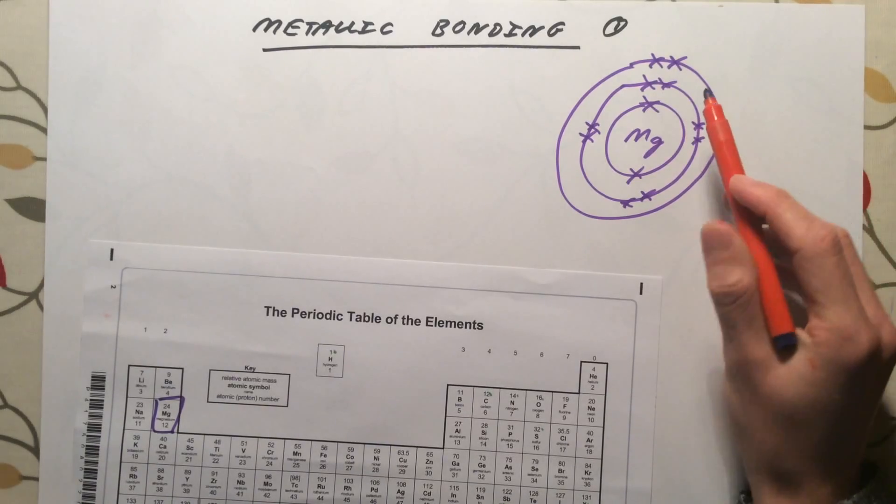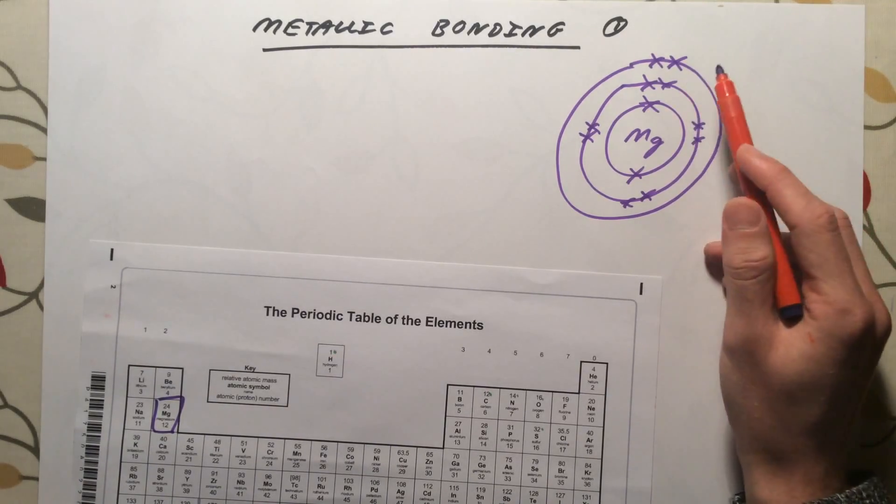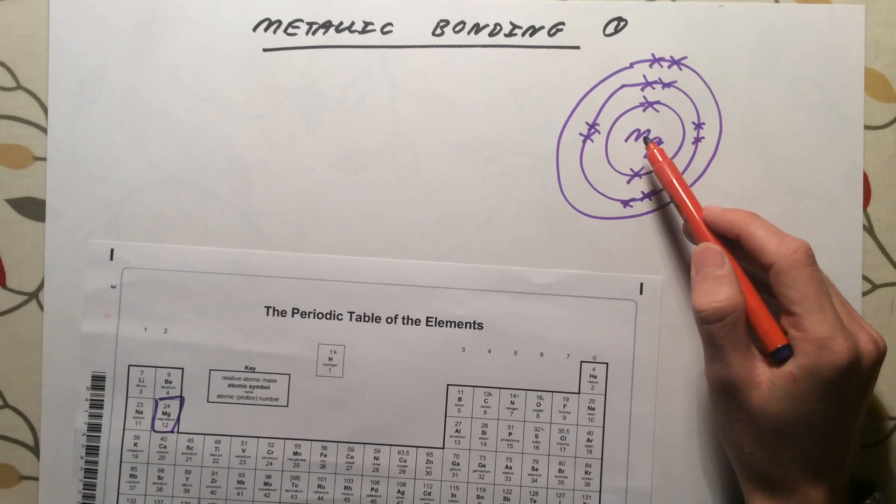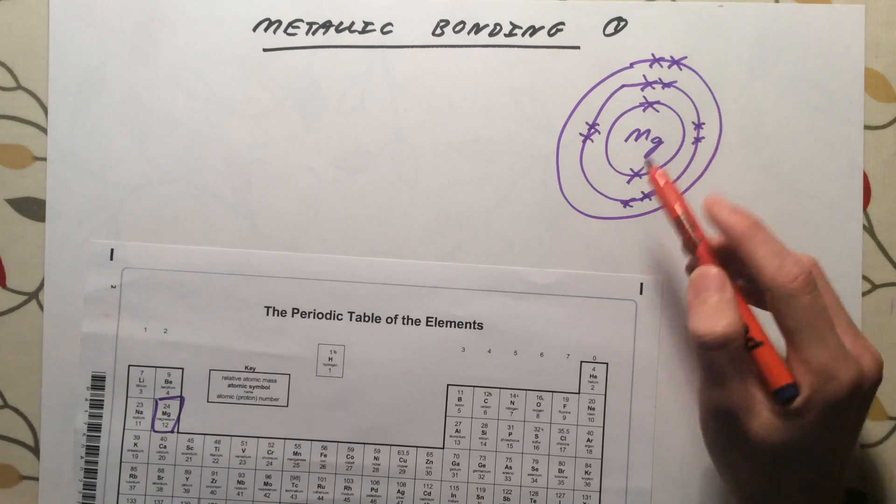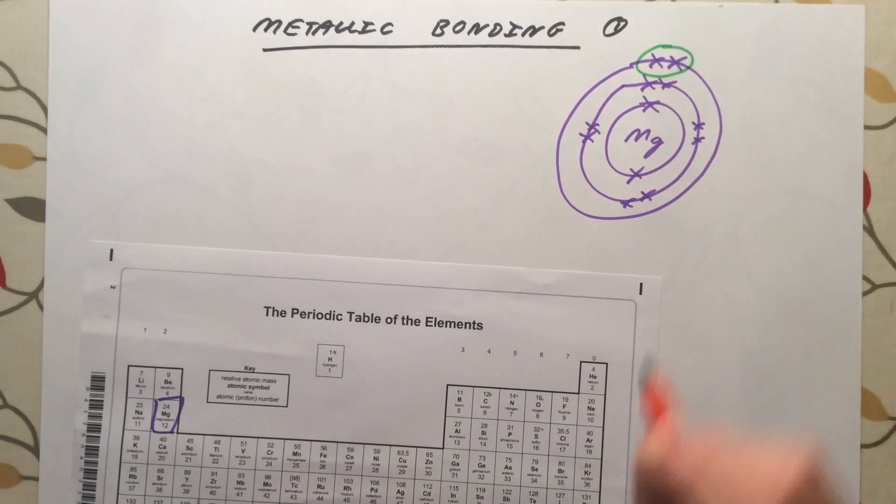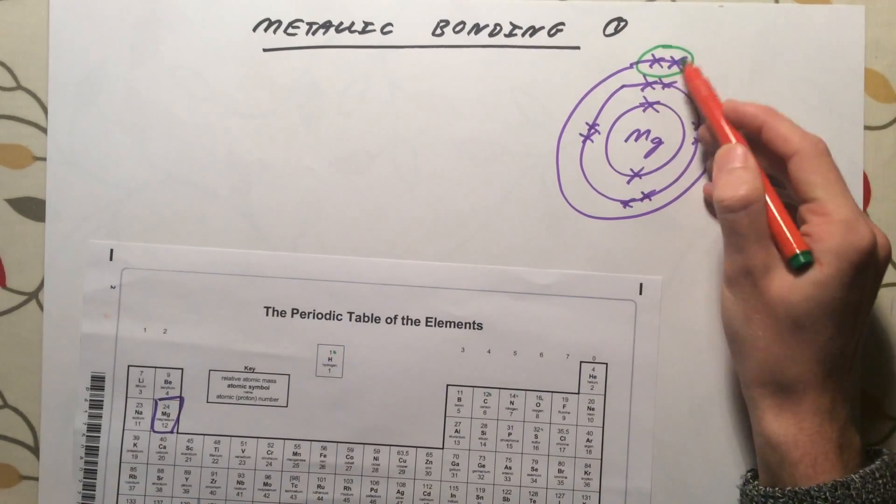We've already said that for atoms to become stable, they want to have a full or an empty outer shell. So therefore, magnesium, when you have a large number of magnesium atoms together, they all want to somehow get rid of these two electrons here.